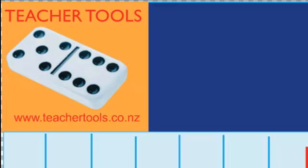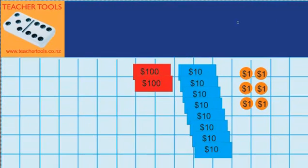Welcome to Saving Hundreds. In this lesson I'm learning how knowing 10 ones makes 10 and 10 tens makes 100 can help me solve problems like 286 plus something equals 400.